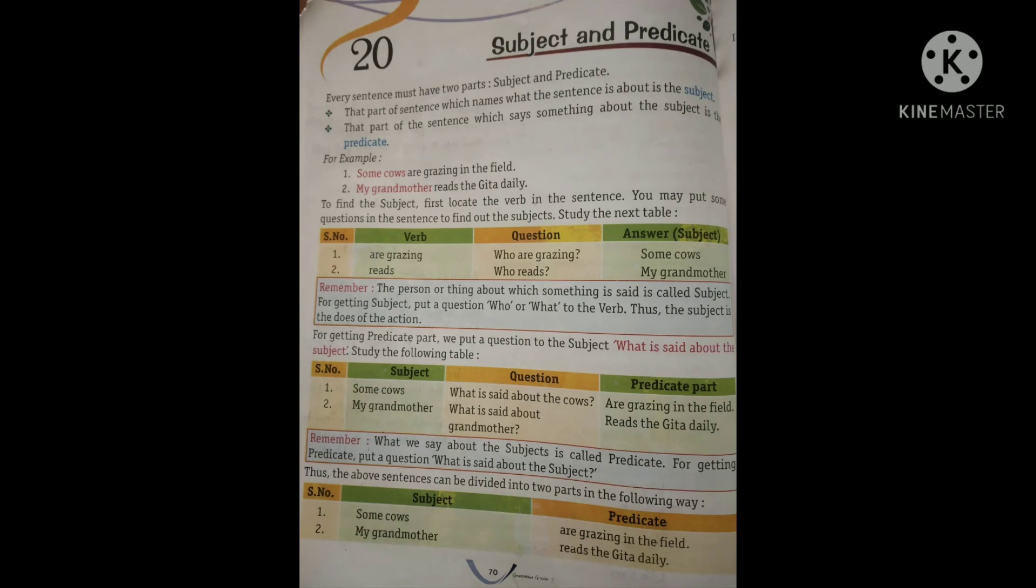A person or a thing about which something is said is called the subject. And what we say about the subject is called the predicate.